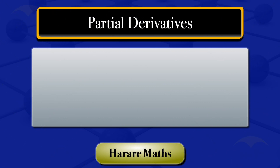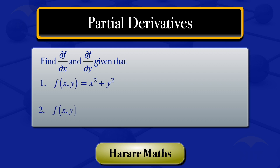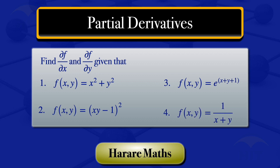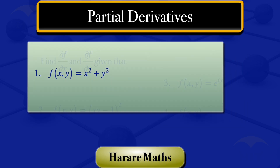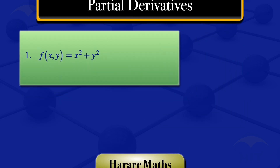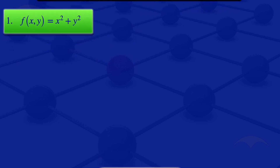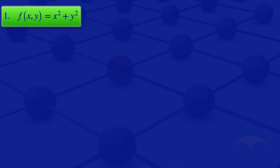In this video I'm going to find the partial derivative of f with respect to x and the partial derivative of f with respect to y, given four multivariable functions appearing on the screen. I'll start by looking at the first one: f(x, y) = x² + y².